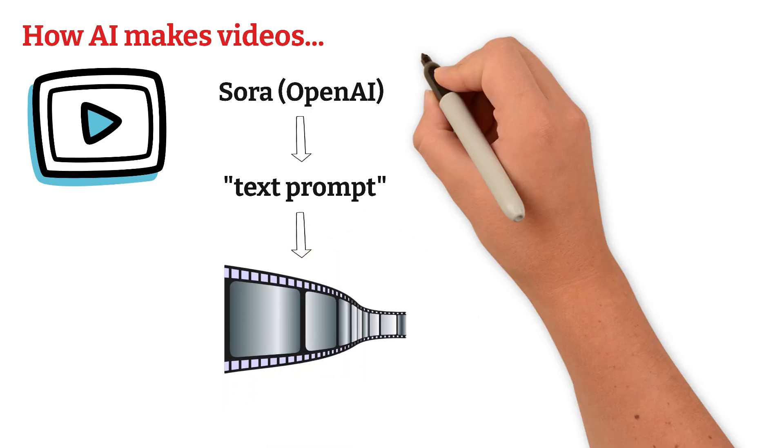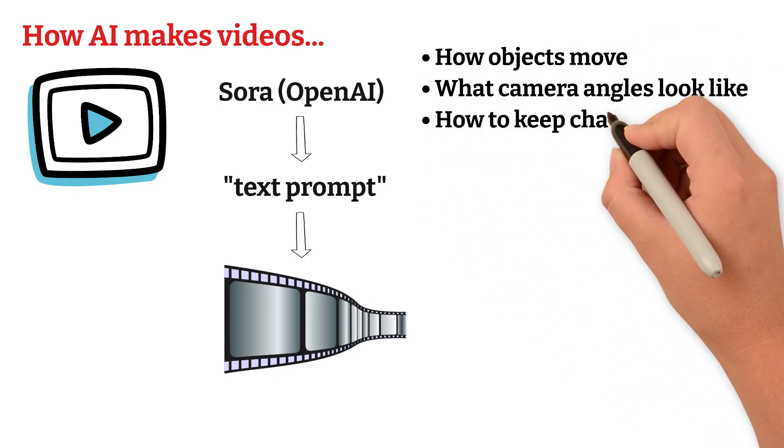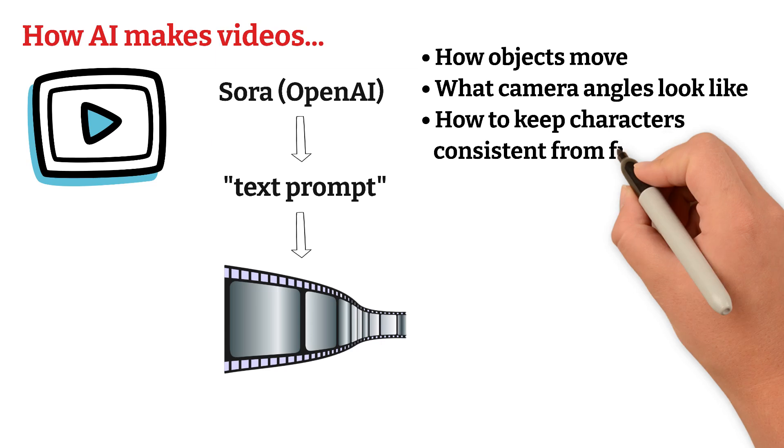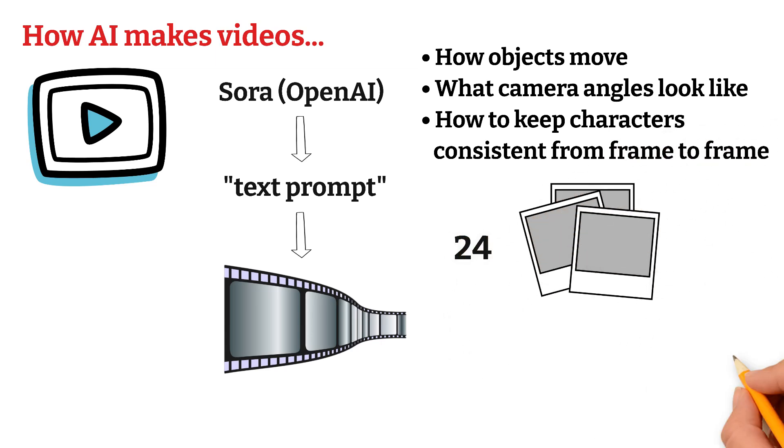They understand how objects move, what camera angles look like, how to keep characters consistent from frame to frame. It's like generating 24 pictures per second and making sure they all connect into a smooth video.